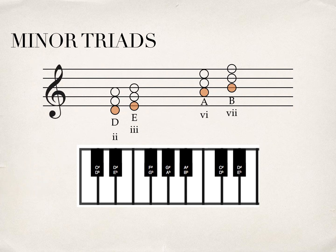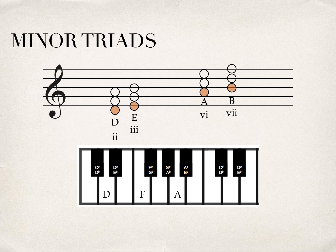Again, just like we said, a minor third is three half-steps. So if that's the case, we calculate the distance between the root and the third. In this instance, the D — or the two chord — between D and F is three half-steps: one, two, three. You can use this same concept for any of these chords except the seventh chord, and again, that is called a diminished triad, but that'll be in a later lesson.